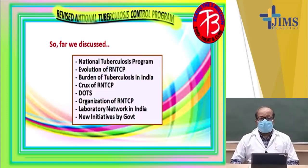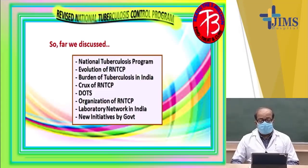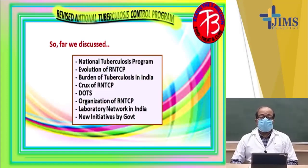We discussed the DOTS in totality and about the organization of RNTCP — at the state level, the center level, at the level of the Ministry of Health and Family Welfare, at the state level, and at the district level. The laboratory network in India includes the national referral laboratories, which are six in number and located in different parts of the country. We also spoke about the IRL — intermediate reference laboratory — located mostly in state capitals, one per state. And there are the designated microscopy centers, or DMCs.